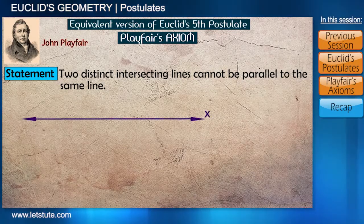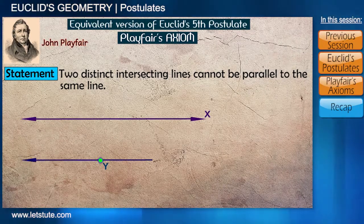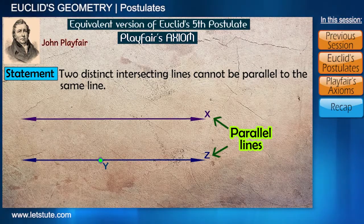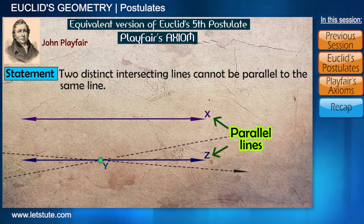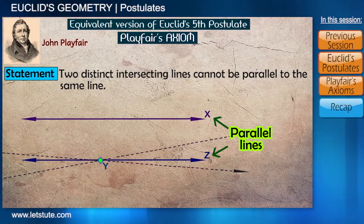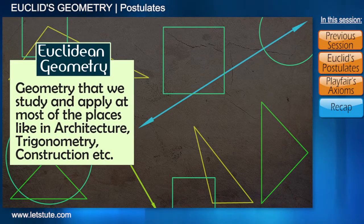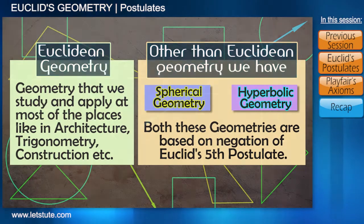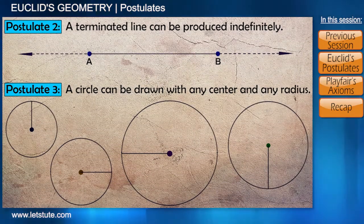For every line x and for every point y not lying on line x, there exists a unique line z passing through point y and parallel to x. Even if you try to make any other line which is parallel to x and passing through point y, it is not possible. This was Playfair's axiom, and this is where we end the session. We will be using all these axioms and postulates at various places in geometry, but the statements may be a little different from these ones.